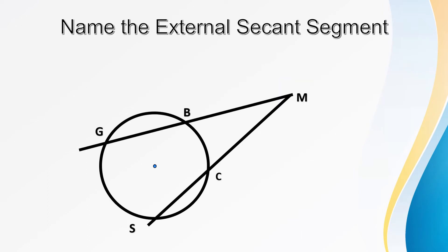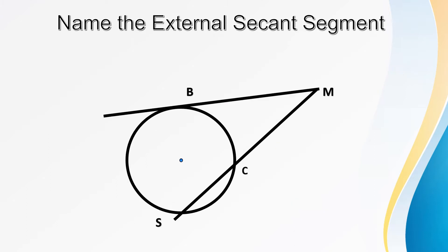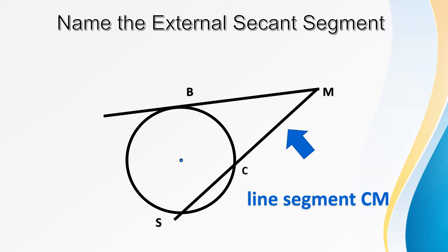For example, name the external secant segment in this given illustration. There are two: we have line segment BM and then line segment CM. Name the external secant segment in this illustration. In this illustration, there's only one external secant segment and that is line CM.